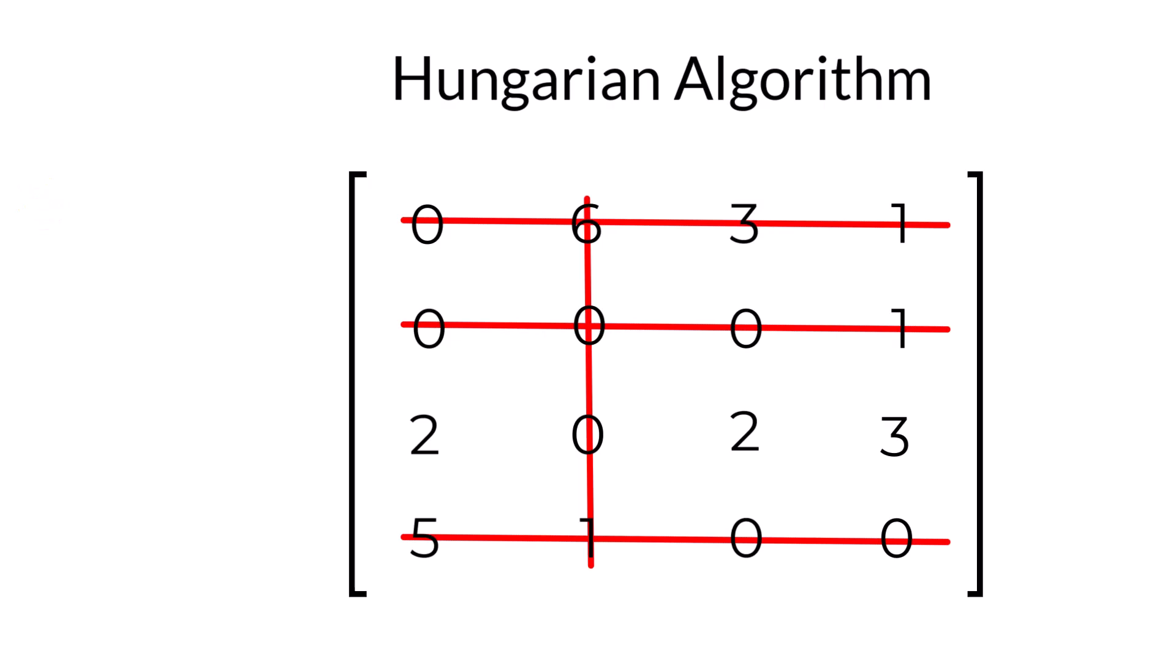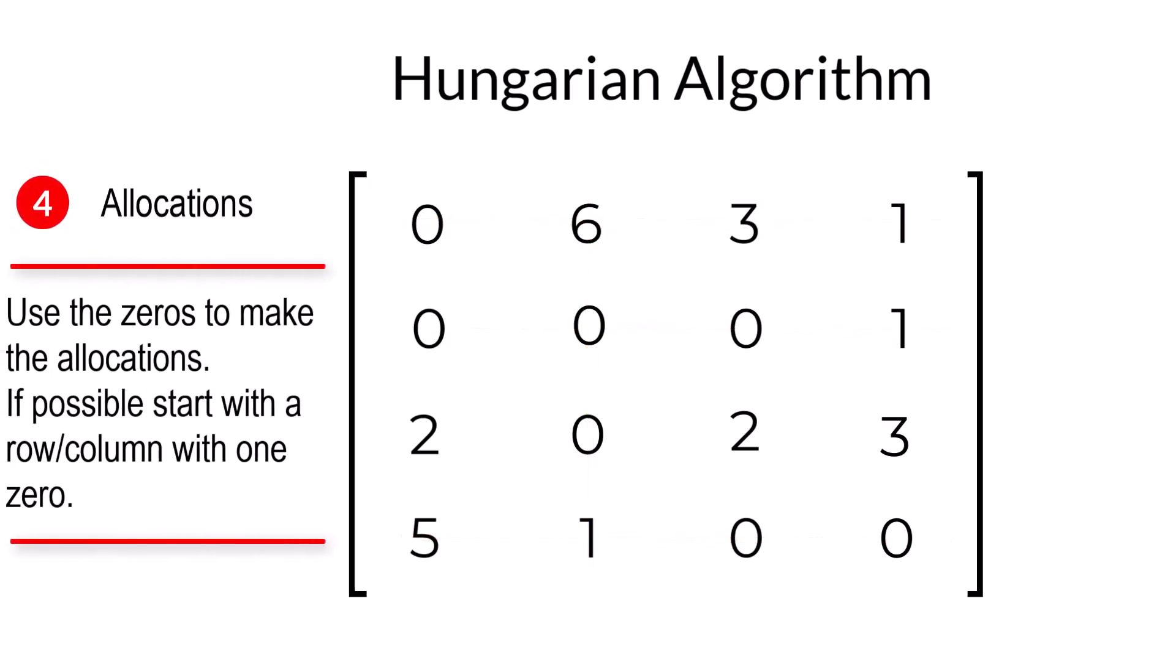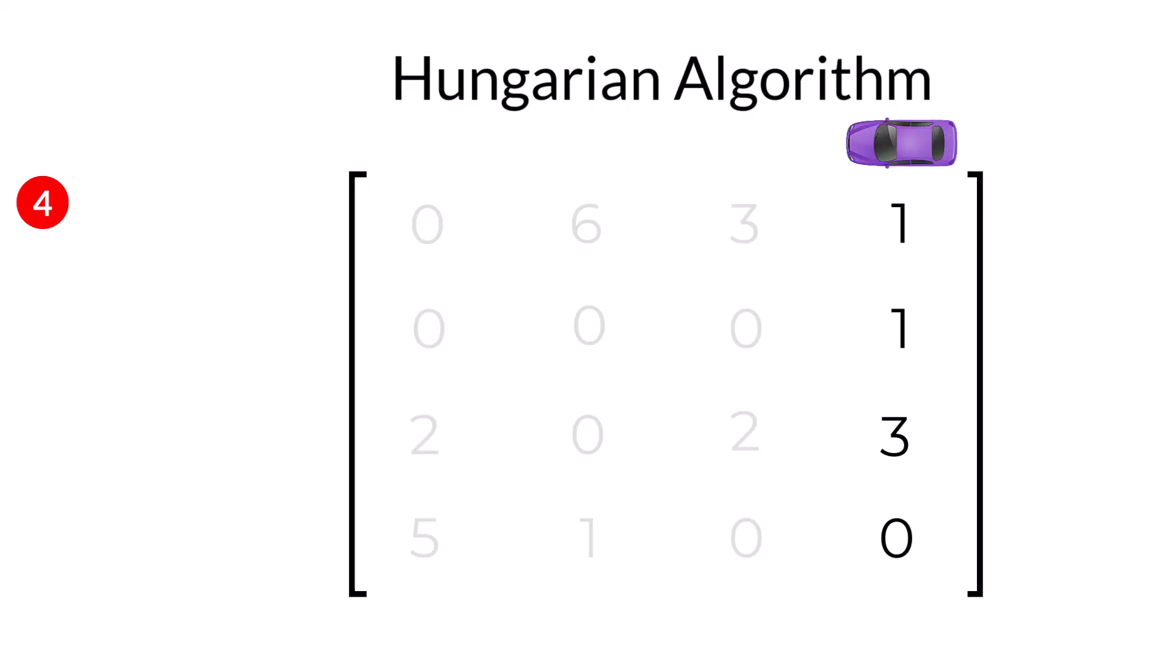Now, we're almost done. Step four. In this step, we use the zeros to make the allocations. Sometimes the solution is unique and other times there may be multiple solutions. So, start with the row or column that contains just one zero. In this problem, column four has only one zero. So, therefore, car four is allocated to row four. In other words, the purple car has been allocated to Daisy.